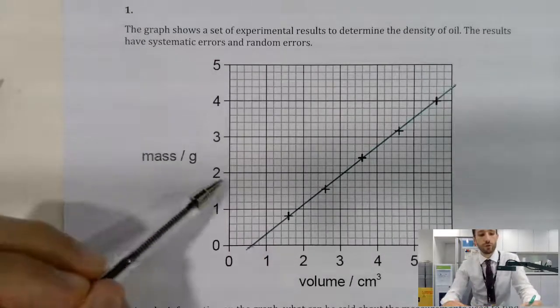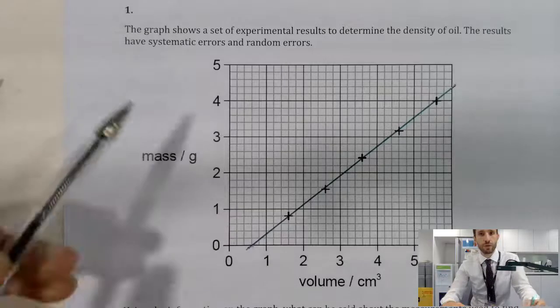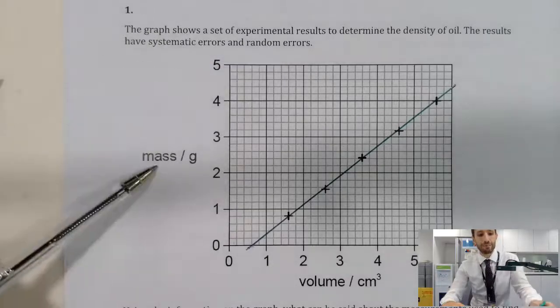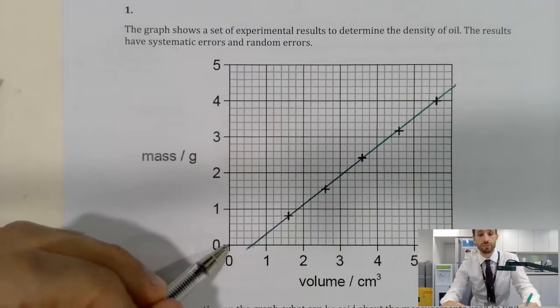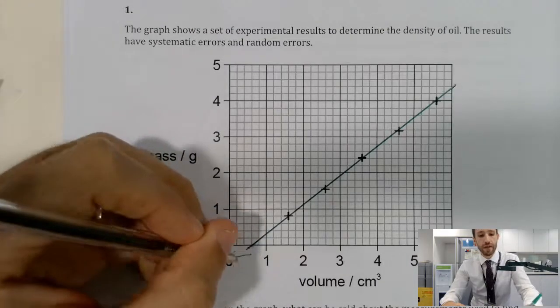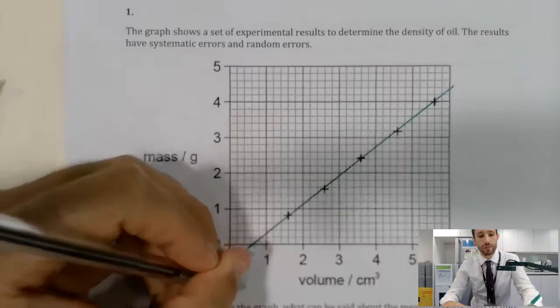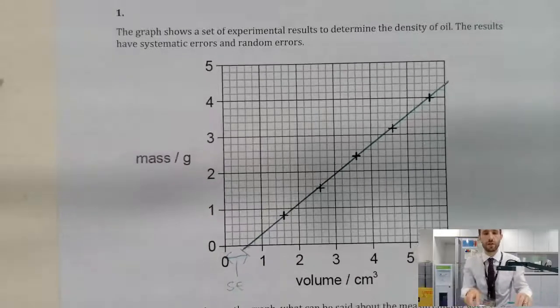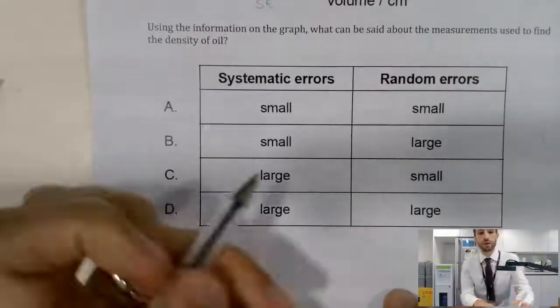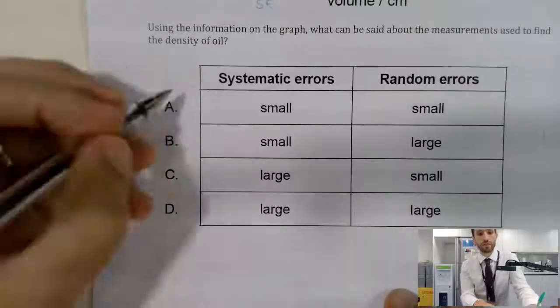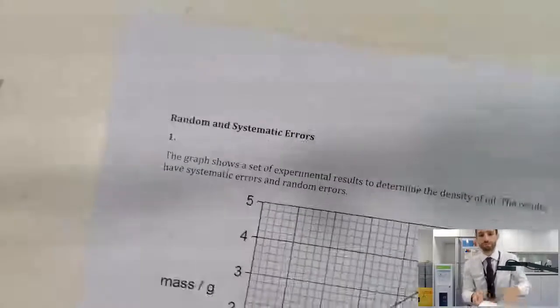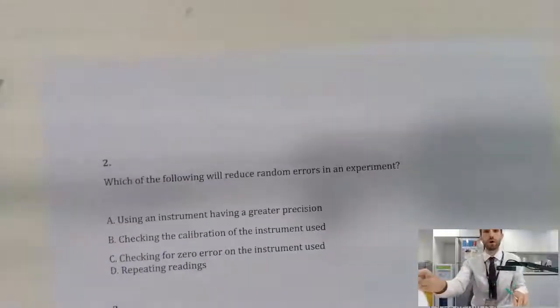However, we notice here it does not go through the zero. We're looking at a relationship between mass and volume and we would expect this line to cross the origin. The reason that has happened is because there is a systematic error here. So if we look at our choices here, we've got a small random error, a large systematic that is C.